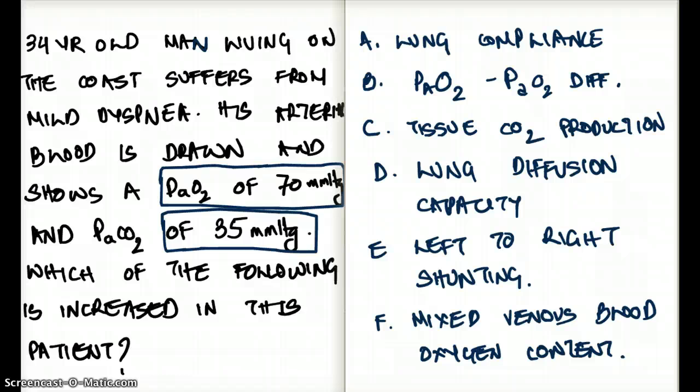So we have the arterial PaO2 and the carbon dioxide PaCO2. Now we can't really make a judgment unless we know what the oxygen was in the alveolus. So let's see if we can solve the problem using this equation.